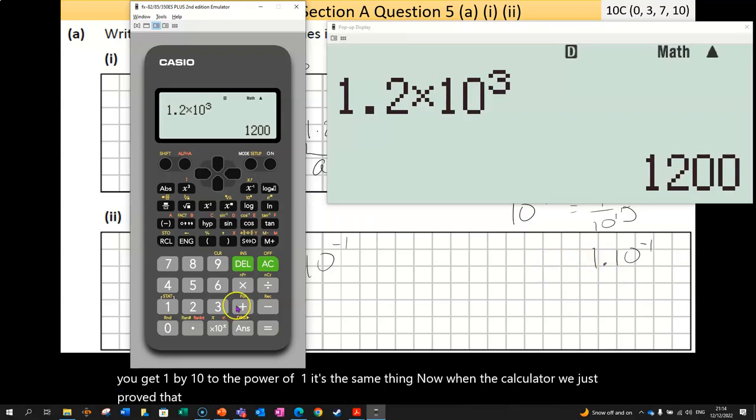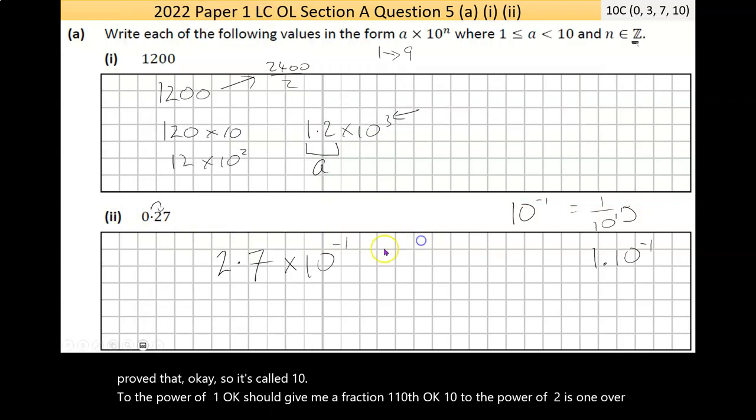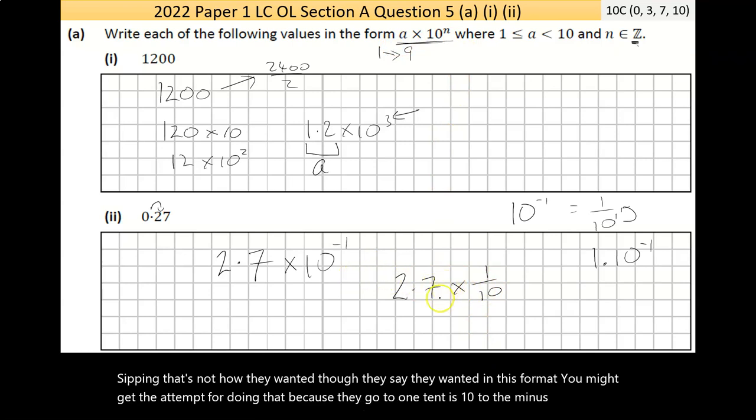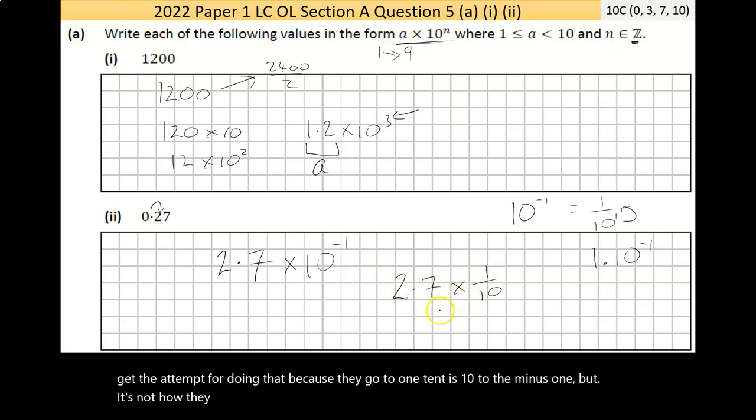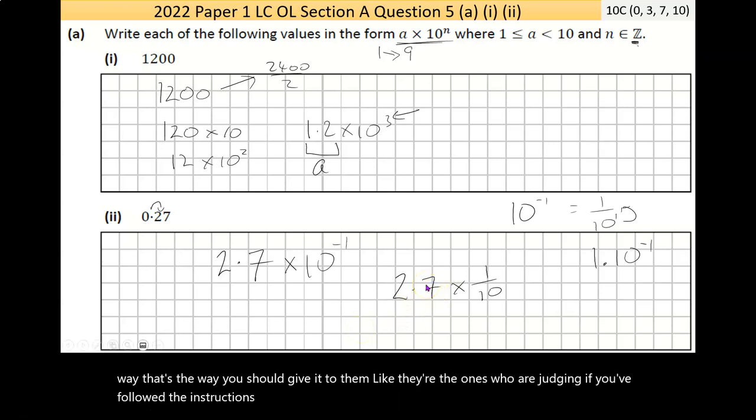In the calculator, we can just prove that. Let's go 10^-1, and it should give me a fraction, 1 tenth. 10^-2 is 1 over 100. Now that's not how they want it, though. They say they want it in this format. Believe it, when they say they want something in a specific way, that's the way you should give it to them. They're the ones who are judging if you've followed the instructions properly.